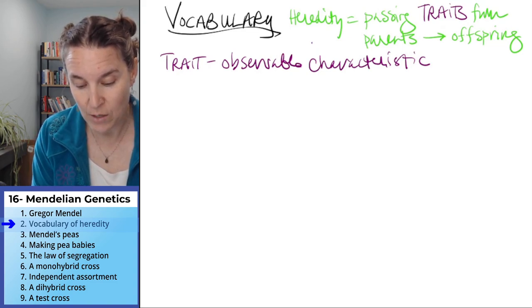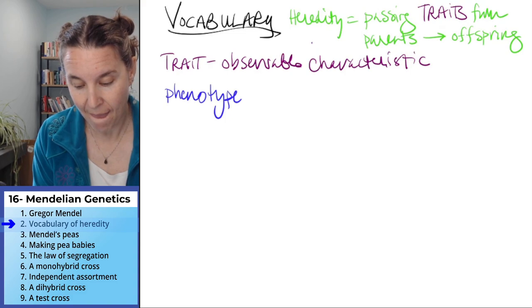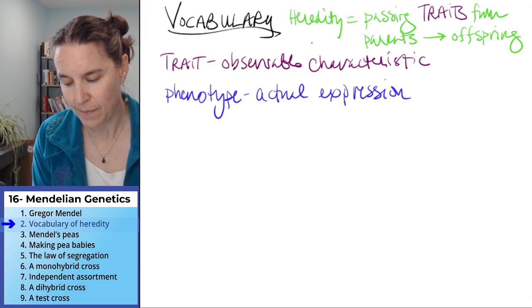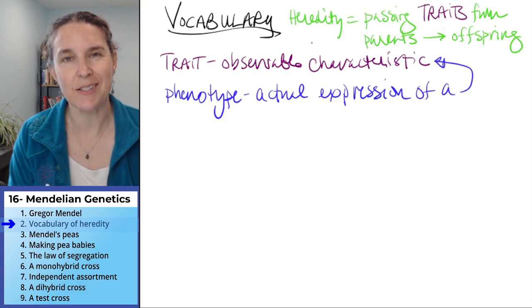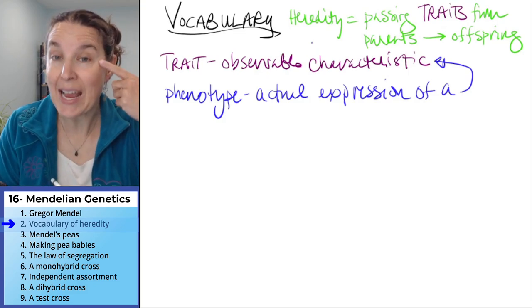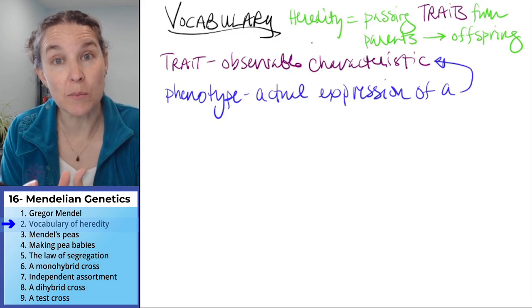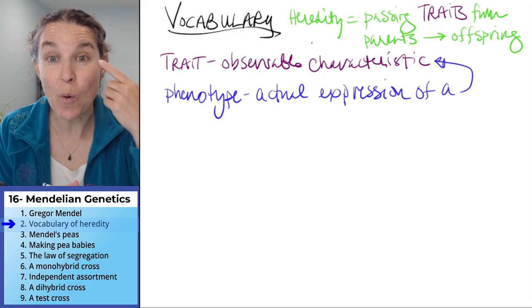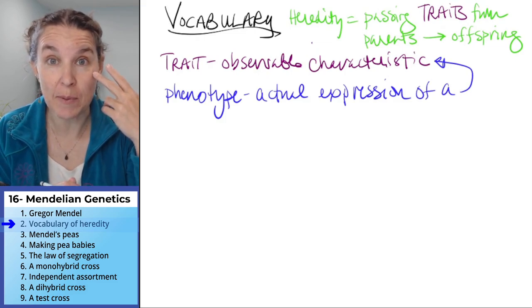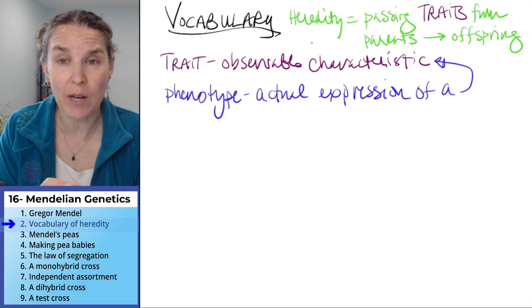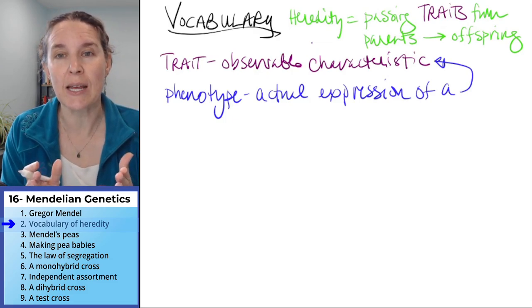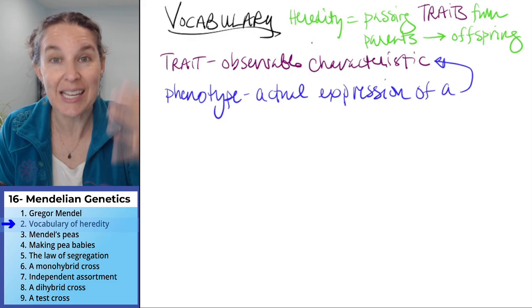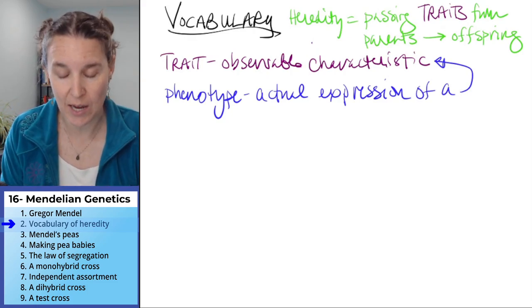Your phenotype is the actual expression of a characteristic. So, for example, the eye color trait has multiple possible phenotypes based on the genes that the person has. One possible phenotype is blue eyes, another is green eyes, another is brown eyes. The phenotype can have much variation, but it's the actual physical expression of the trait in an individual.